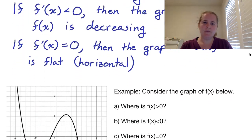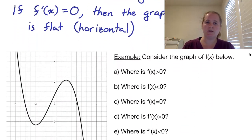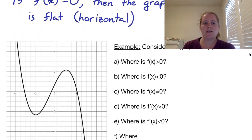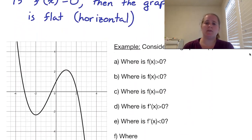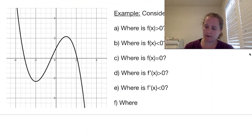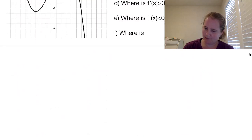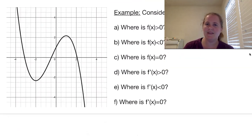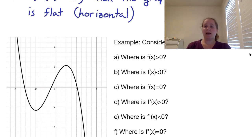I have a graph here of a cubic function, and we are going to approximate — not give exact values — but find where the function itself is positive, negative, or equal to zero, and also where f prime of x is equal to zero. So first, let's find where f of x is greater than zero, which is just the function itself.